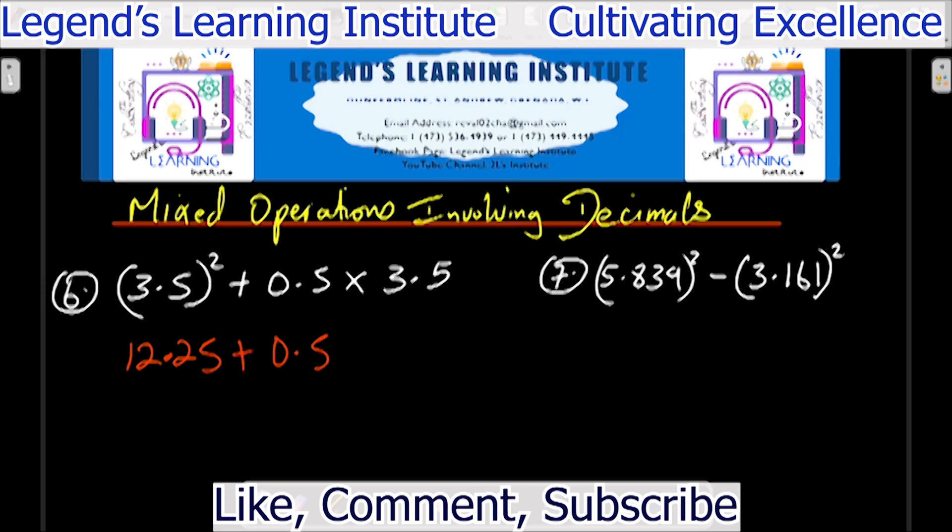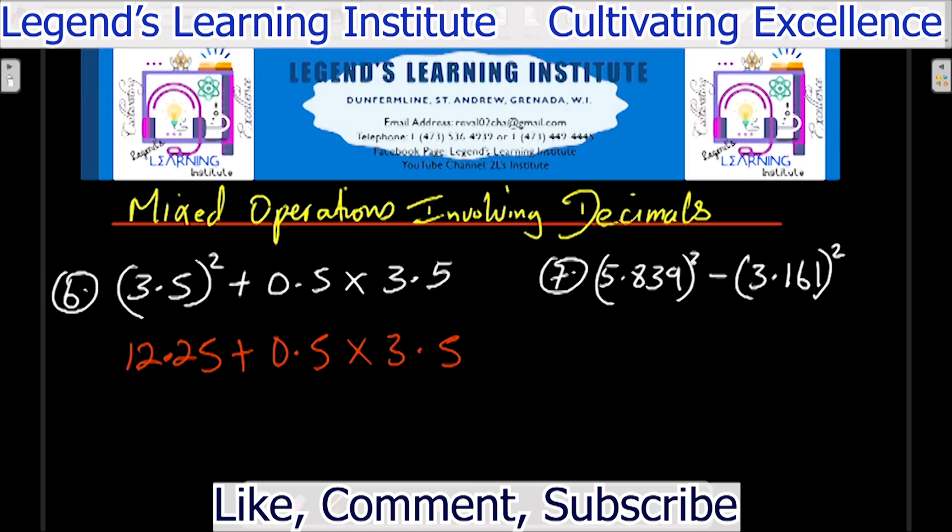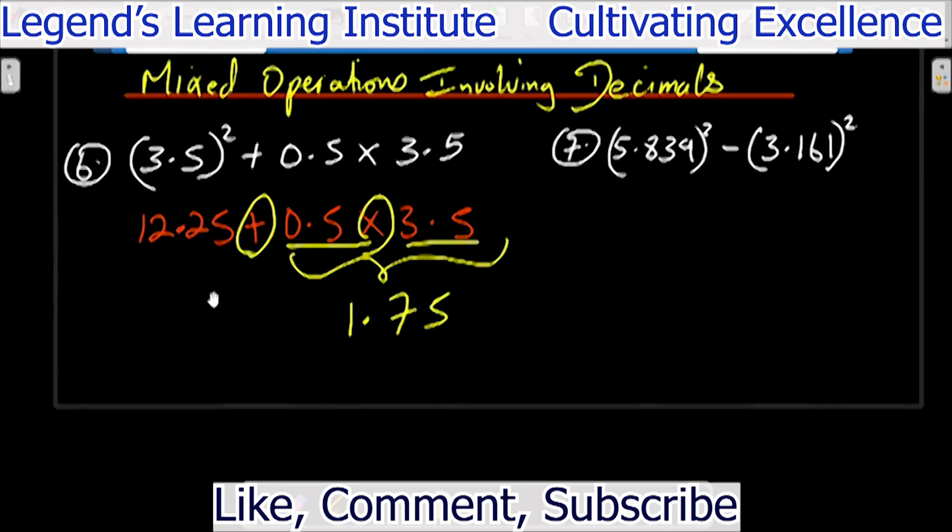Then we have multiplication and addition here. We have to multiply before we add. So we say 0.5 times 3.5. That gives us 1.75. And then we bring down the 12.25. So 12.25 plus 1.75, that should give us 14.